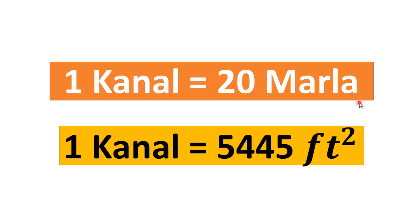If you are using small Marla, then one small Marla is equal to 225 square feet. In that case, one canal will be equal to 4,500 square feet. But here, I am using big Marla, so one canal is equal to 5,445 square feet.